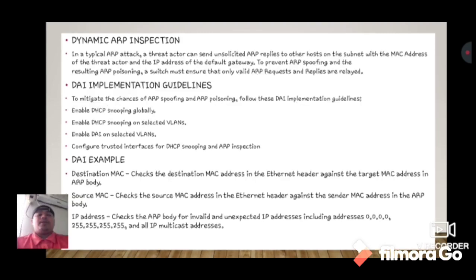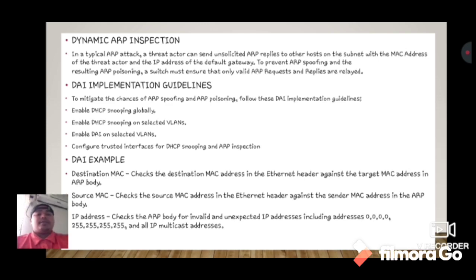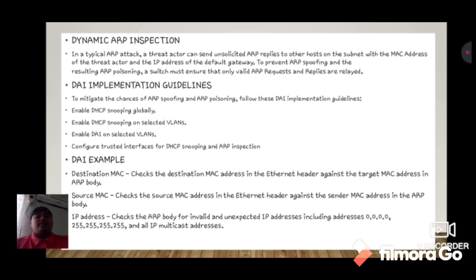Dynamic ARP Inspection (DAI). In a typical ARP attack, a threat actor can send unsolicited ARP replies to other hosts on the subnet with the MAC address of the threat actor and the IP address of the default gateway. To prevent ARP spoofing and the resulting ARP poisoning, a switch must ensure that only valid ARP requests and replies are relayed.